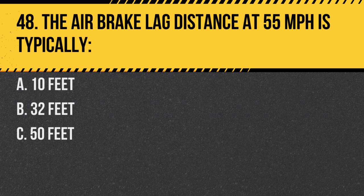Question 48. The air brake lag distance at 55 miles per hour is typically: A. 10 feet. B. 32 feet. C. 50 feet. Answer B. 32 feet. It's the distance before brakes engage after the pedal is pressed.